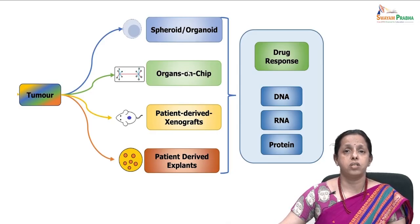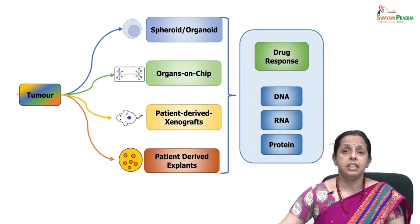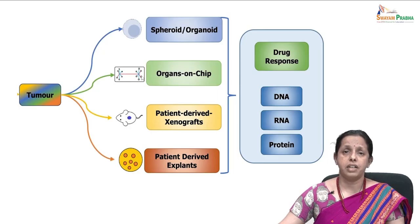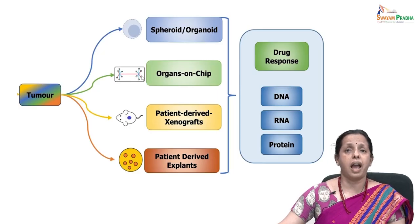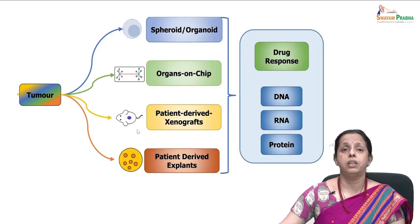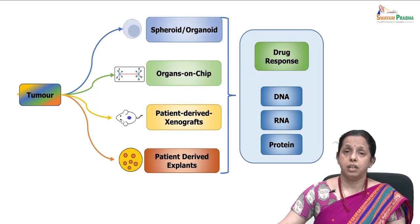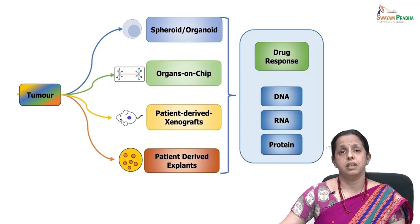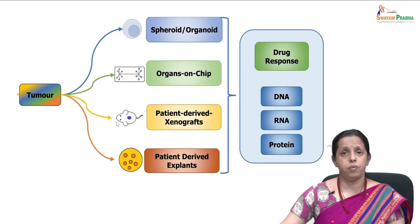Organ-on-chips: several researchers and a lot of engineering technology are involved in developing organ-on-chips for many cancer models, such as breast, lung, colon, and pancreatic models. Coming to patient-derived xenografts — very, very well explored. Many labs have come up with mouse models — several mouse models based on immune status, such as the nude mice, the SCID mice, the NOD SCID mice — which we will be talking about in the next session.